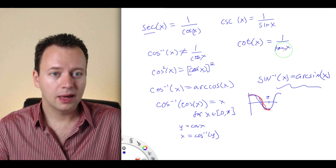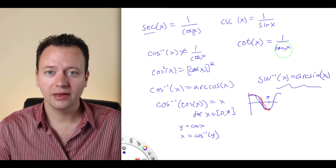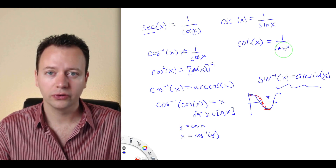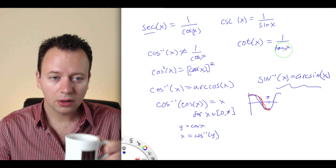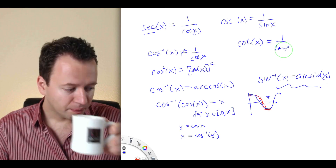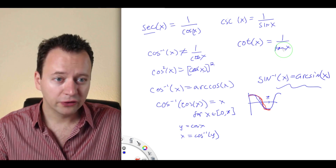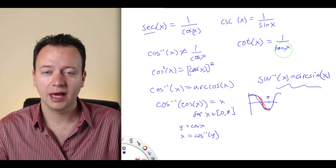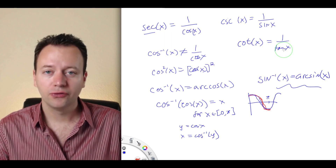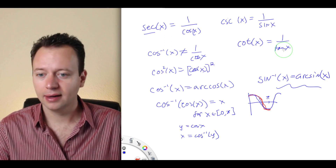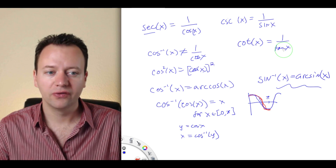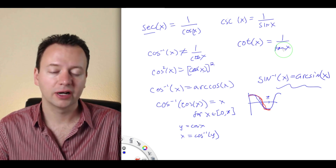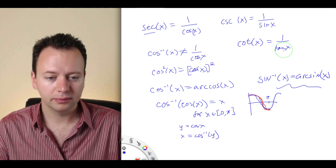In this lecture, we're going to look at the derivative rules for the secant function and the cosecant function. We'll save the derivative rules for cotangent and tangent for a later section when we talk about the product rule.